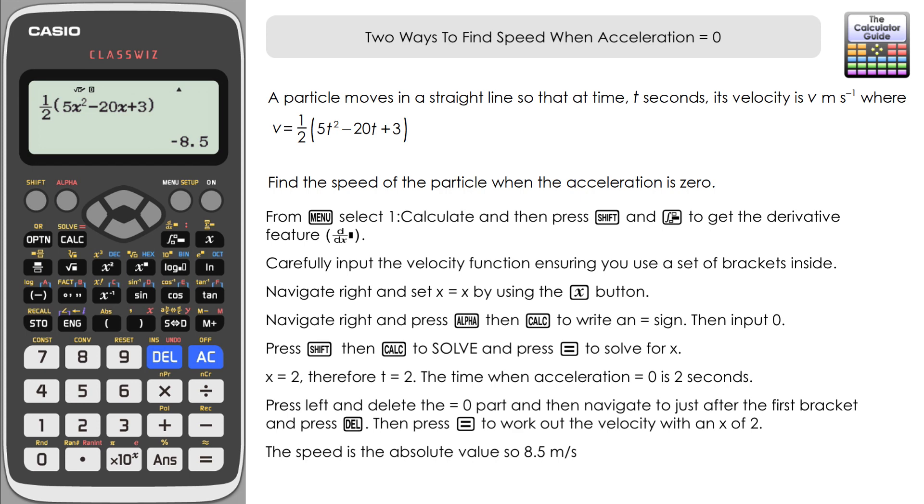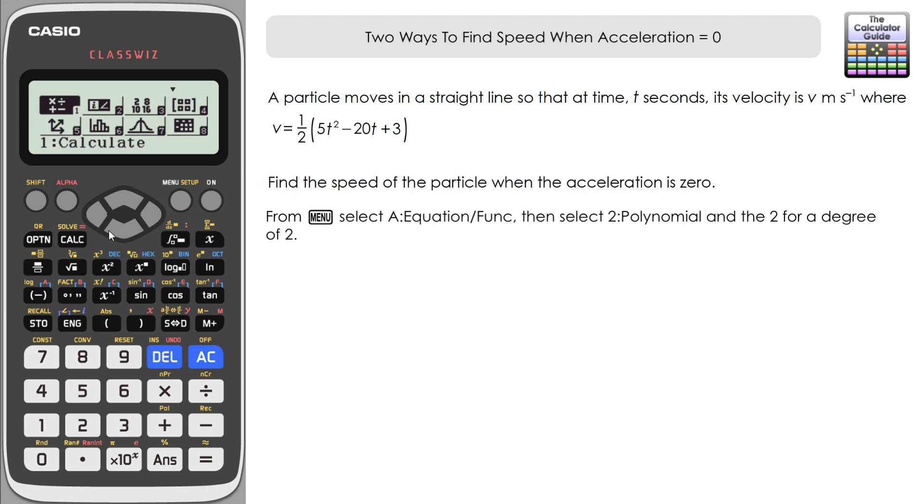Okay, let's have a look at the second way, which is using the equation function feature. So we need to go to the menu, and then we need to navigate down on the Casio FX 991 EX to option A, which is equation function, or wherever your polynomial solver is located. We want 2 polynomial, and we've got t squared, so therefore we've got x squared, which means we want 2 here.